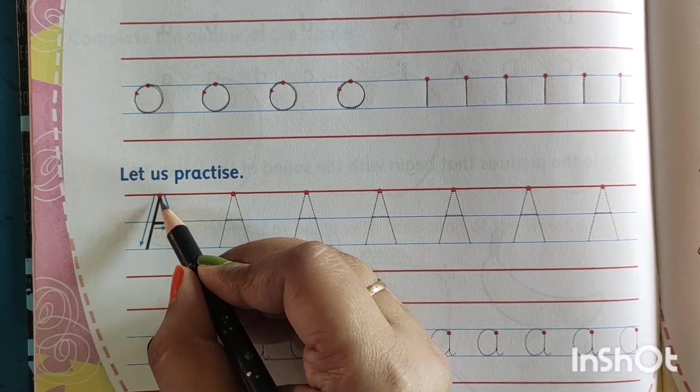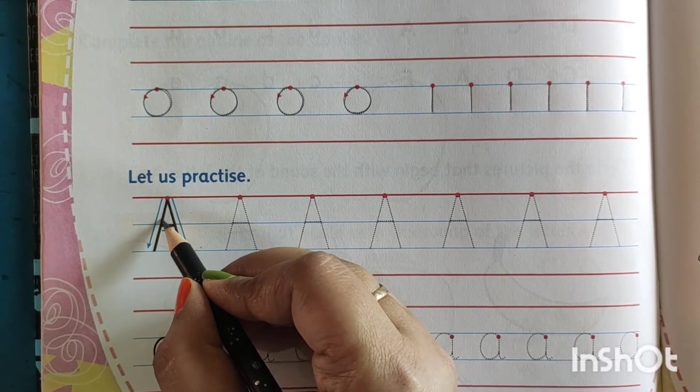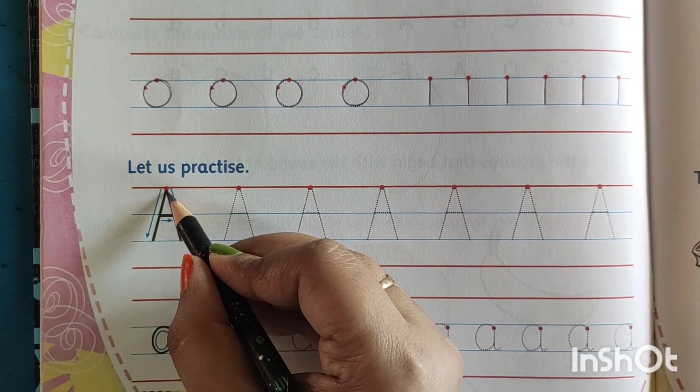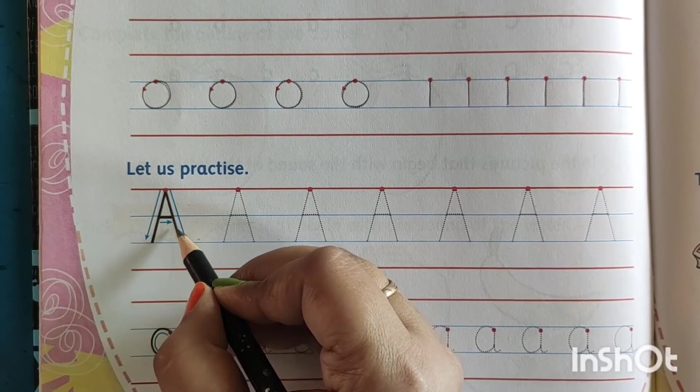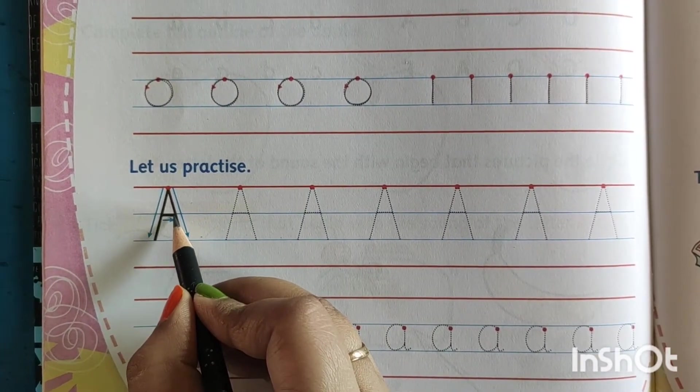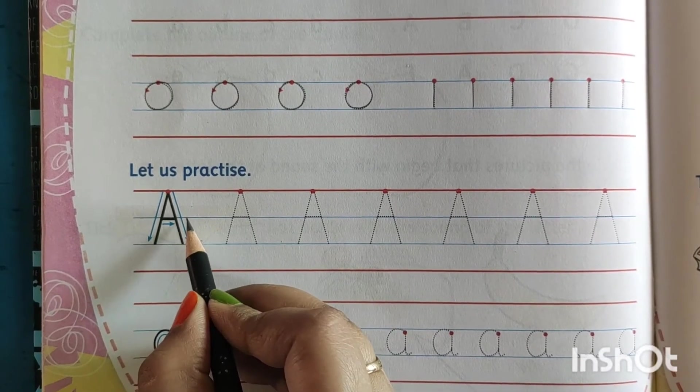From red point. The slanting line will go downward. Another slanting line will go downward. Then the sleeping line from left to right side.